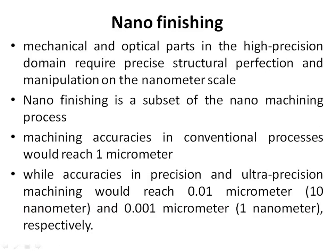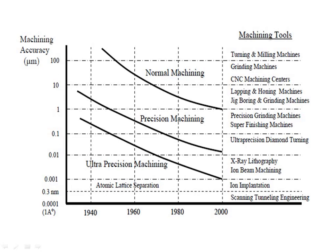Nanofinishing: Mechanical and optical parts in the high precision domain require precise structural perfection and manipulation on the nanometer scale. Nanofinishing is a subset of the nanomachining process. Machining accuracies in conventional processes reach 1 micrometer, while accuracies in precision and ultra-precision machining reach 0.01 micrometer (10 nanometer) and 0.001 micrometer (1 nanometer), respectively. The figure shows the historical progress of achievable machining accuracy over the last century.